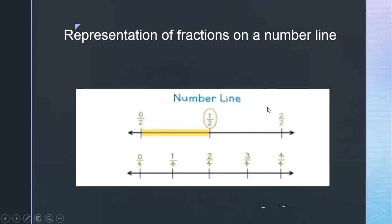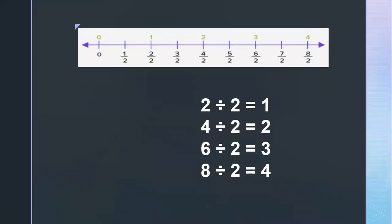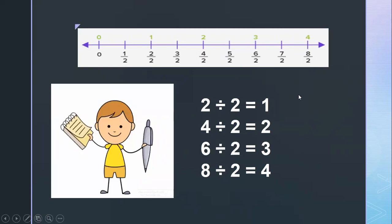Similarly, if you want to write three upon four, you look at the denominator, which is four. You divide the line between zero and one into four equal parts, and three upon four will come after three parts. Suppose you have to mark six upon two on your number line — six upon two equals three. If you want to mark seven upon two, it will come between three and four, because seven upon two equals three point five.